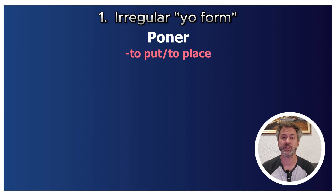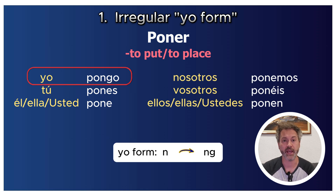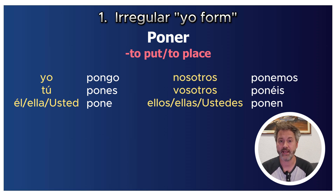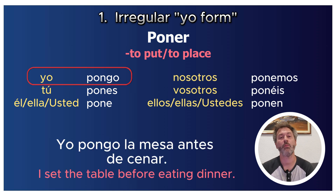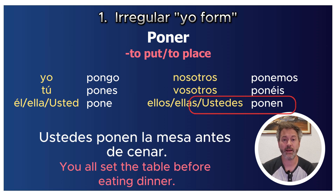The verb poner: if conjugated regularly it would be 'yo pono,' but the yo form changes from N to NG, giving us 'yo pongo.' All other forms stay the same: tú pones, él/ella/usted pone, nosotros ponemos, vosotros ponéis, ellos/ustedes ponen. For example: 'Yo pongo la mesa antes de cenar' — I set the table before eating dinner. With any other form it's regular: 'Ustedes ponen la mesa antes de cenar.'